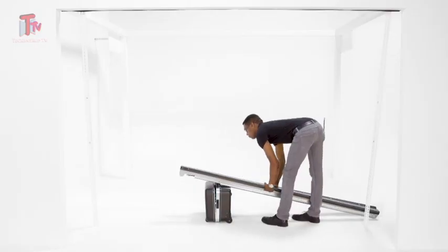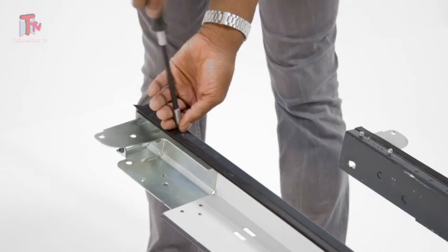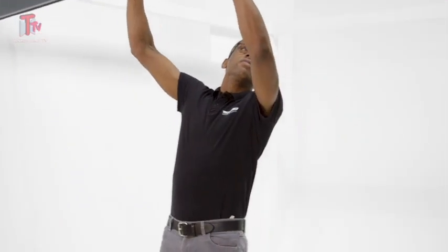You may also, as described in the installation manual, assemble the vertical frames and the head trim on the floor. However, painted frames may get scratched on the outside.